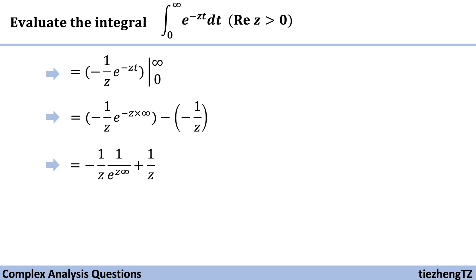Since we already know the real part of z is greater than zero, the first part in this equation is zero because 1 over e to the power of infinity is approximately zero.